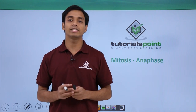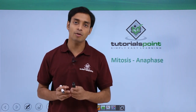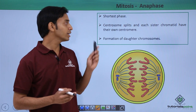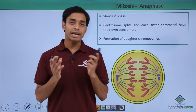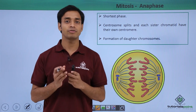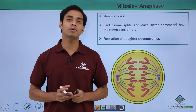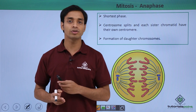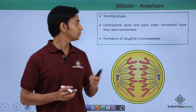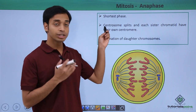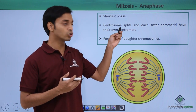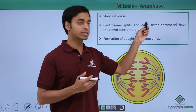Let us now look at the different activities a cell performs during anaphase. Anaphase is basically the shortest phase of the cell cycle, taking about two to three minutes. During this phase, the chromosomes split and each sister chromatid has its own centromere.